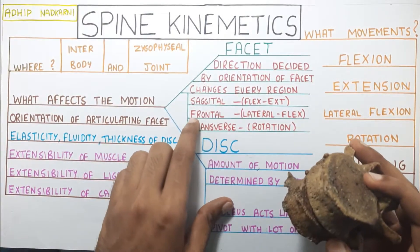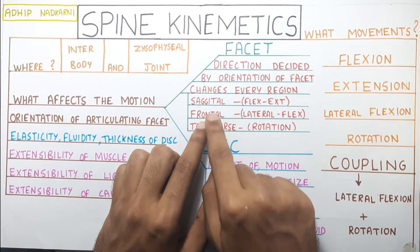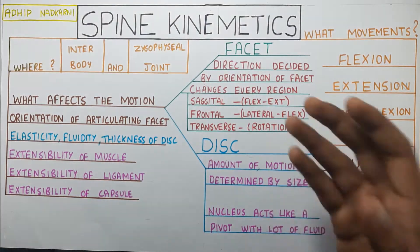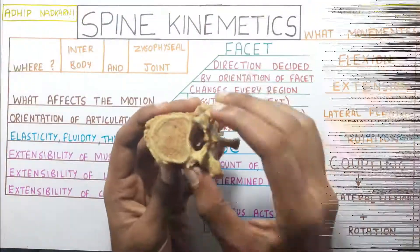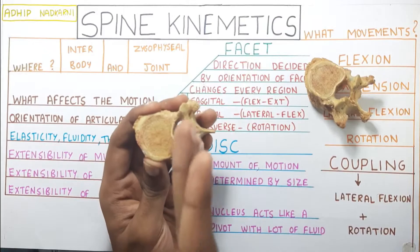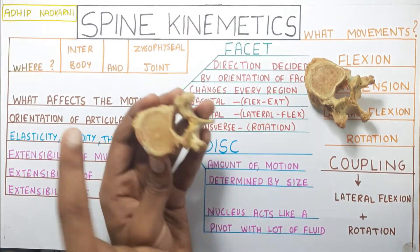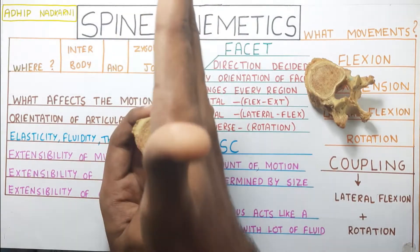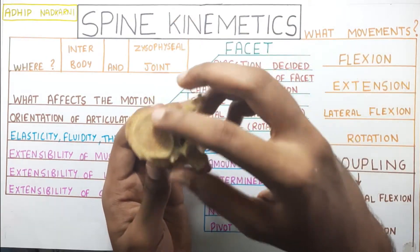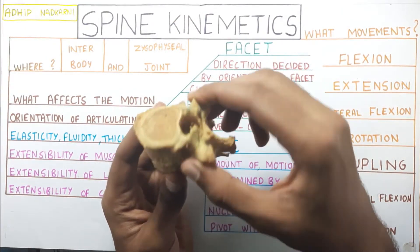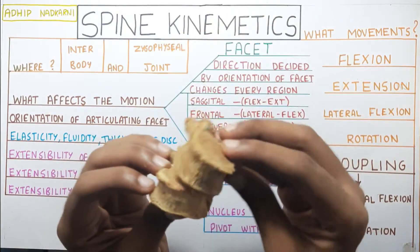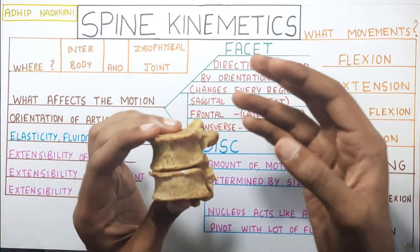If the orientation of the facets is in the frontal plane, the movement that will be occurring will be lateral flexion. Taking thoracic vertebra — if you see the orientation of the facets, it's in the frontal plane. This is the anterior side, this is the posterior side. The plane cuts the vertebra into anterior and posterior parts — so it's in the frontal plane. That's why the movement occurring will be lateral flexion, which is the predominant movement in the thoracic spine.